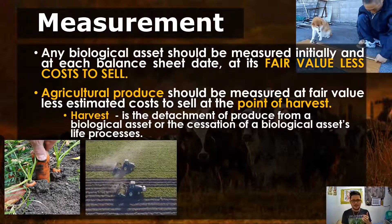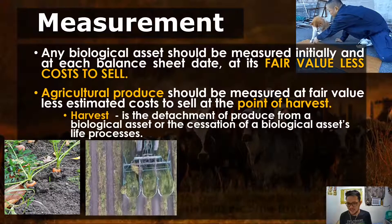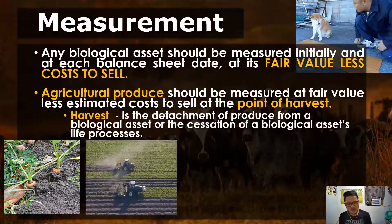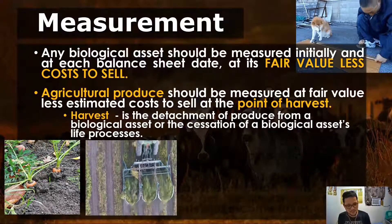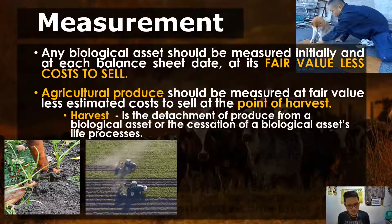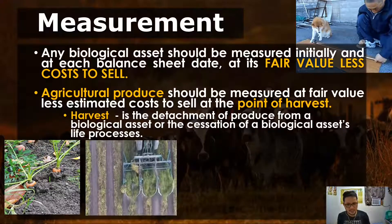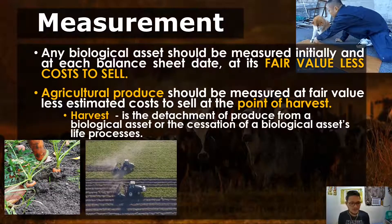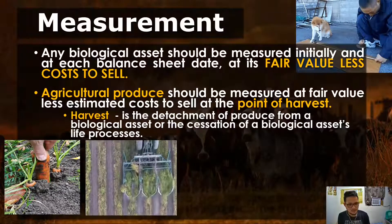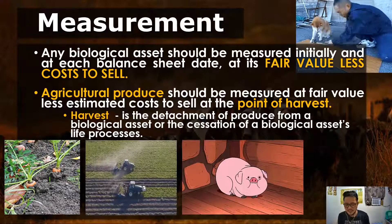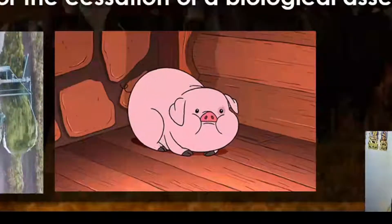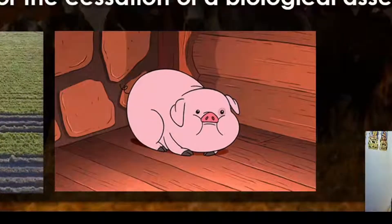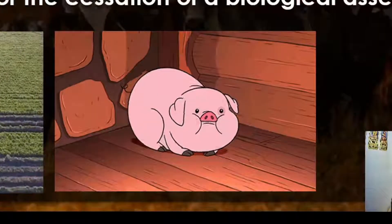To expand more on harvest — what is harvest? It is simply the detachment of a produce from a biological asset, or the cessation of a biological asset's life processes. So there is the detachment of a produce from the asset, and there is the cessation of the biological asset's life process.